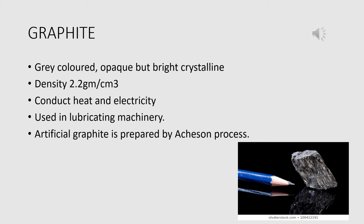Now, artificial graphite. The supply of natural graphite is relatively less than its worldwide demand, which is why graphite is prepared artificially. In the Acheson process, a mixture of sand and coke powder is heated at 3000 degrees Celsius in an electric furnace. Silicon carbide is first formed, which then decomposes to form silicon and graphite.